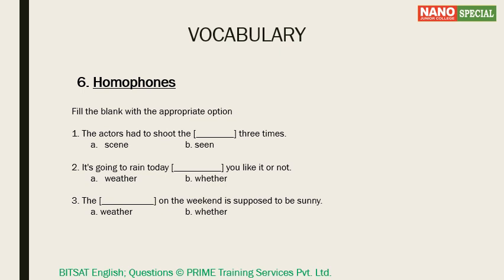On the other hand, if question three is talking about atmospheric conditions — 'the weather on the weekend is supposed to be sunny' — the answer is W-E-A-T-H-E-R. In this context, we should also look at two commonly confused words: 'weather' and 'climate.' People often confuse the two. Weather is the state of atmosphere at a particular place over a short period of time, while climate refers to a pattern of weather over a long period. You can't say 'the climate today is sunny' — that's wrong usage. You say 'today's weather is sunny.'